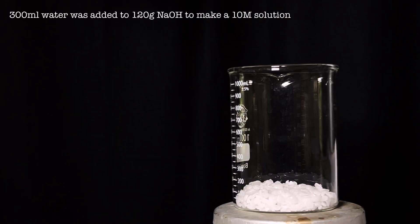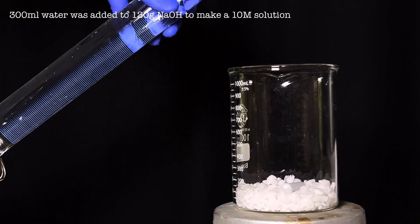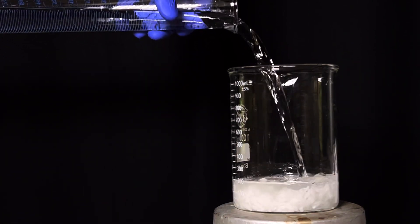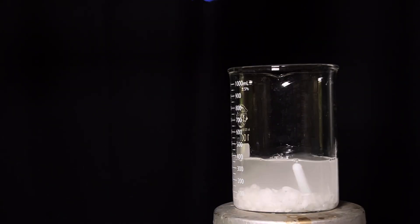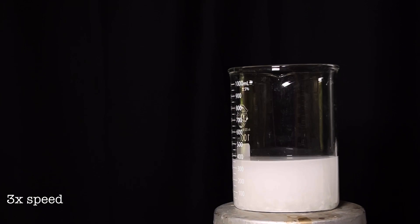Now in another 1000 milliliter beaker, 120 grams of sodium hydroxide was taken and a steering bar was placed inside. 300 milliliters of water was added to the beaker using a graduated cylinder. The dissolution of sodium hydroxide in water is extremely exothermic. Be careful while handling hot concentrated sodium hydroxide solution as it is extremely corrosive.